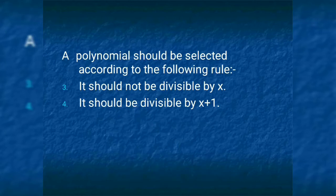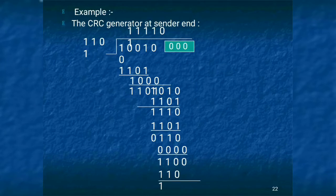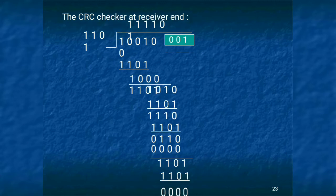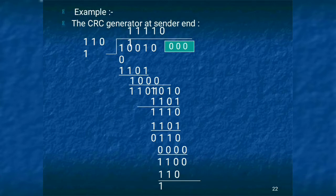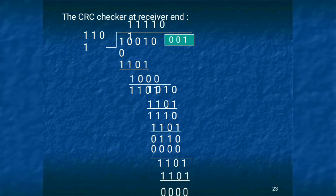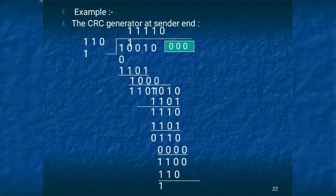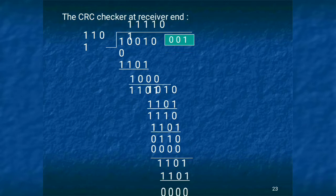The predefined number is divided with the data unit and you get some remainder. When the receiver divides and gets the same remainder, no error is found. If the remainders are not similar, an error is received.